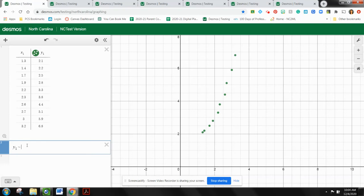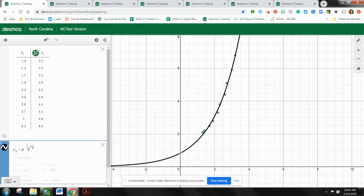So instead of typing in a linear function, when I do Y1, I'm going to do Y1 and my tilde. And then since this looks exponential, I have to do an exponential equation, which is a times b raised to the power of x1, because I'm pulling from my data.